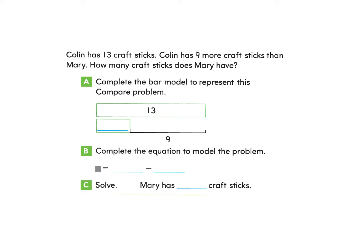Our next problem says that Colin has 13 craft sticks. Colin has 9 more craft sticks than Mary. How many craft sticks does Mary have? We will look at Part A — complete the bar model to represent this compare problem. Here we have the total number of craft sticks Colin has, and Colin has 9 more craft sticks than Mary, so we have the 9 more that Colin has, and this section represents the craft sticks that Mary has.